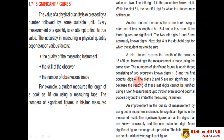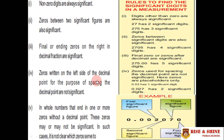If we improve the quality of measurement by using a better instrument, all accurately known digits plus the first doubtful digit in our measurement are called significant figures. So we have accurately known digits 1 and 8, and the first doubtful digit is 4; that is why 2 and 5 are not significant. Using better instruments increases the significant figures in the measured result. More significant figures means greater precision.